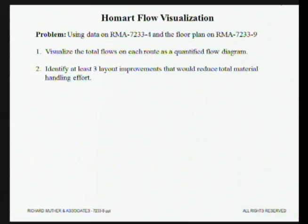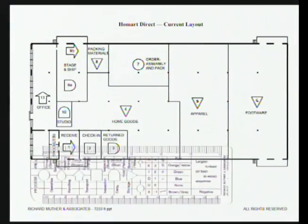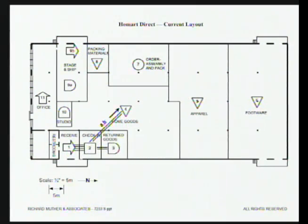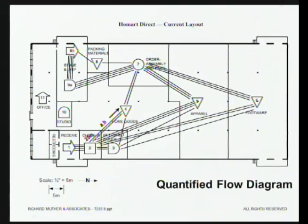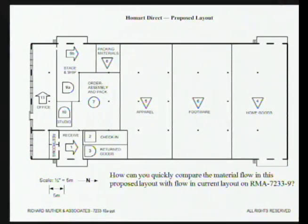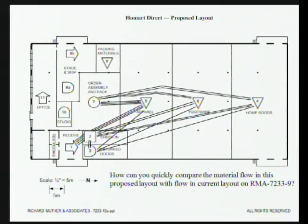We spend basically a day learning this, including how to visualize flow on the layout. We take those line counts and draw onto the current layout what the flow looks like — a quantified flow diagram. This is an essential document in systematic warehouse DC layouts. Working in teams, we rearrange the facility to see if we can do better. We get four, five, or six different ideas for rearranging the building. Some people do much better, some a little better, but everybody improves it in some way. You can compare layouts visually with another quantified flow diagram.